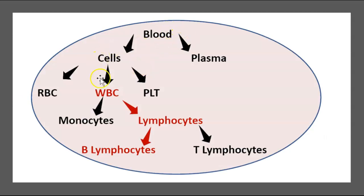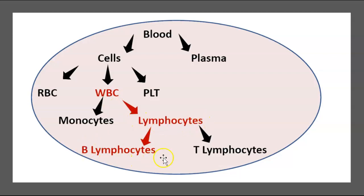Looking at blood, you get the cell components and plasma. For cells, you get red blood cells, white blood cells, and platelets. For white blood cells, there are actually five categories, but today we're only concerned with lymphocytes, namely B lymphocytes, but we're also going to talk about T lymphocytes.